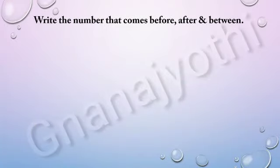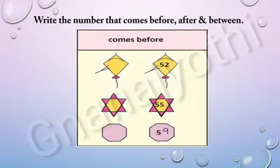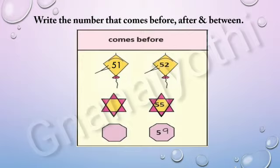Now, let us write the number that comes before, after and between. Let us see before numbers. Look at the first picture — they have given 52. Which number comes before 52? It is 51. Look at the second picture — the number given is 55. Which number comes before 55? It is 54. Look at the third picture — the number given is 59. Which number comes before 59? It is 58.